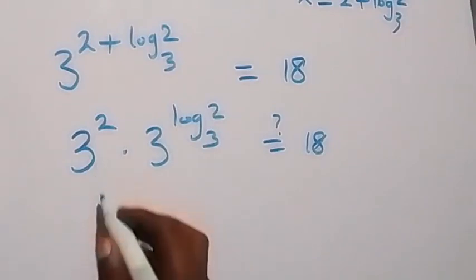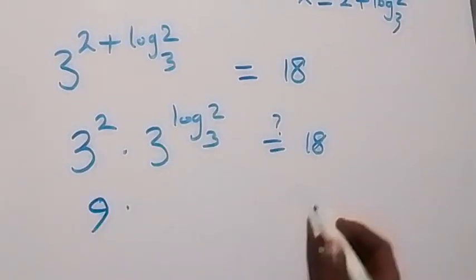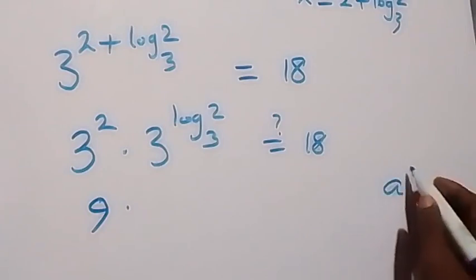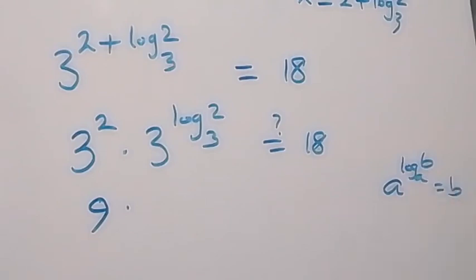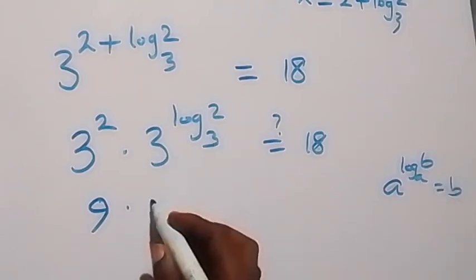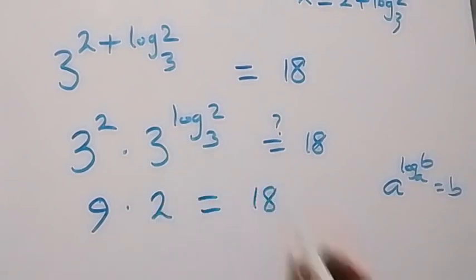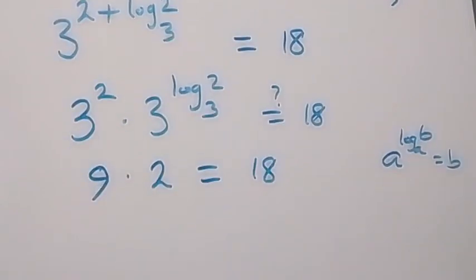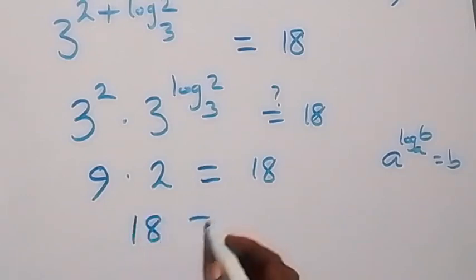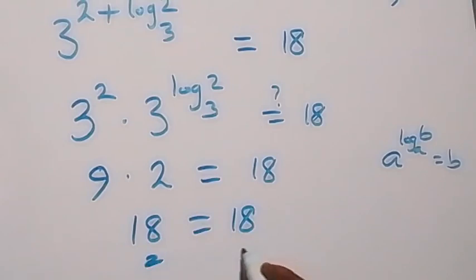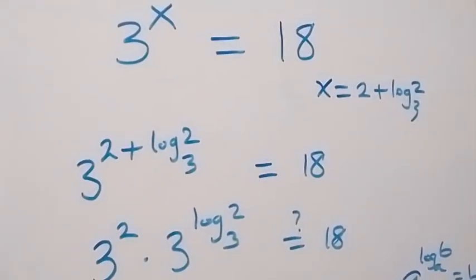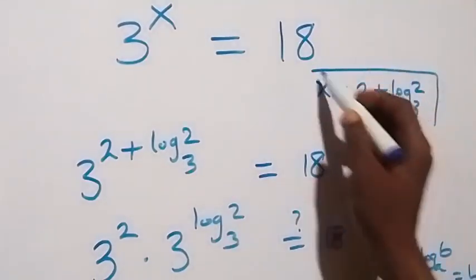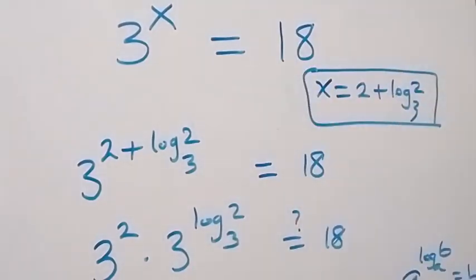Then 3 squared is 3 times 3, that's 9, then times here — applying a raised to power log b to base a, which equals b — this is simply 2, and it equals 18. Then we have 9 times 2 here, that's of course 18, which equals 18. Left-hand side equals right-hand side, and hence we can conclude that x equals to 2 plus log 2 base 3 satisfies this given problem. Thank you for watching, subscribe to my channel and turn on your notification bell.